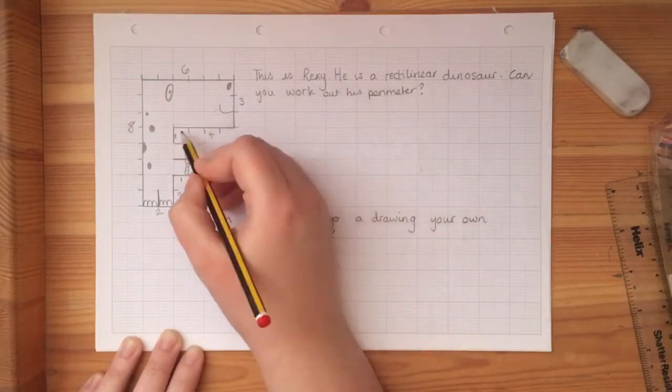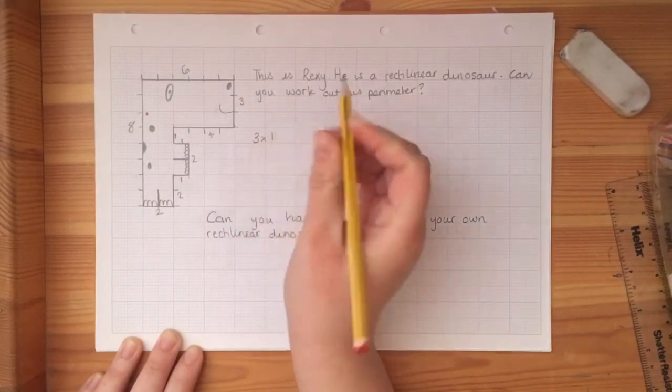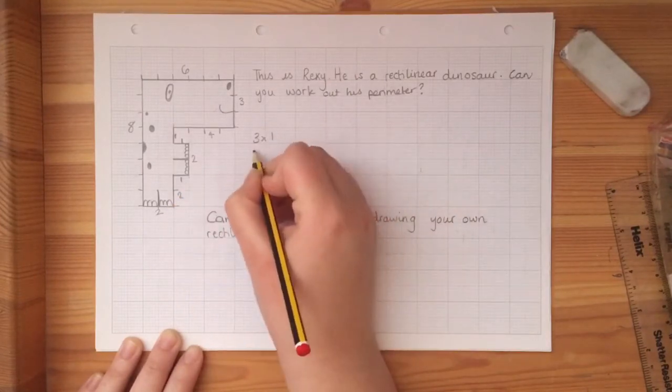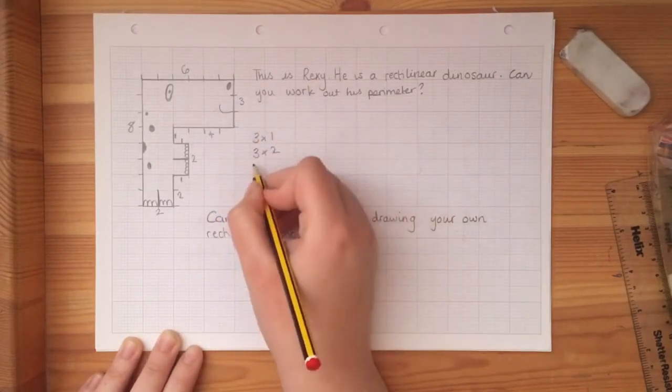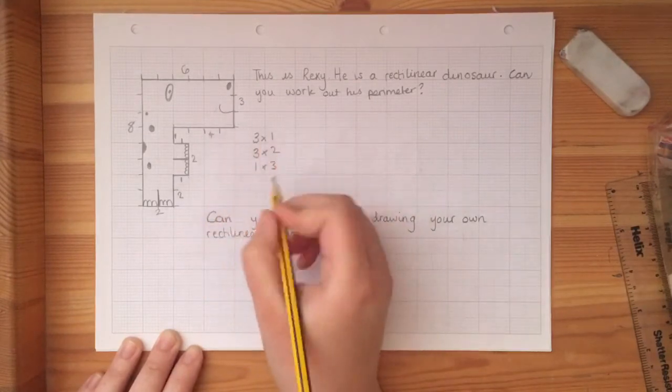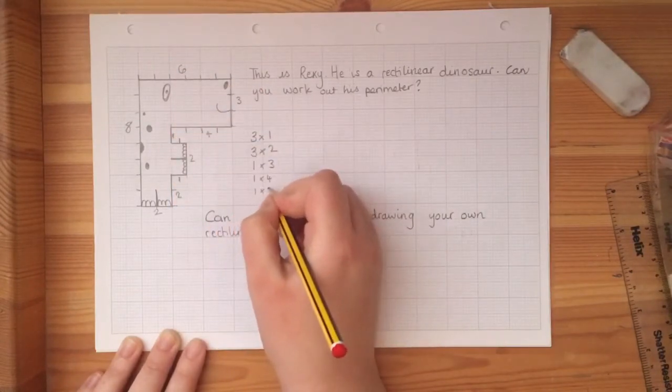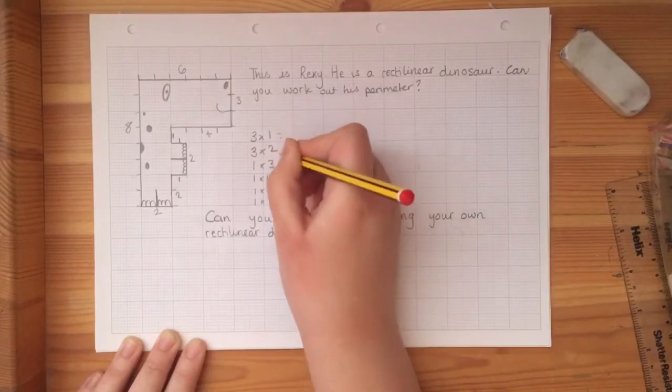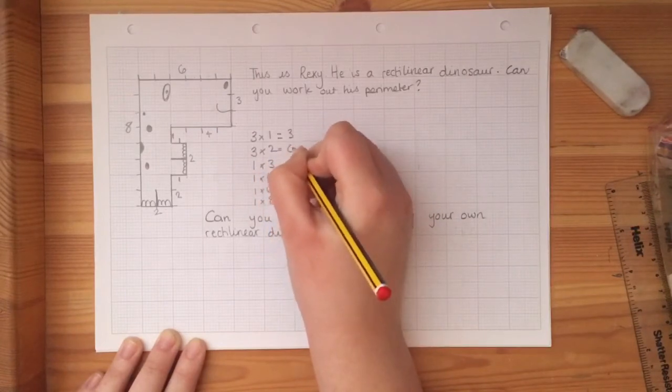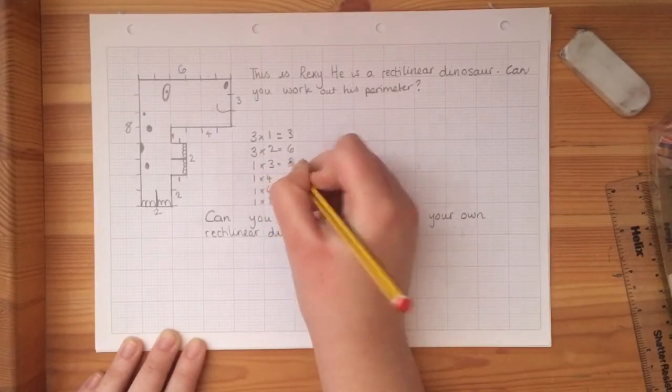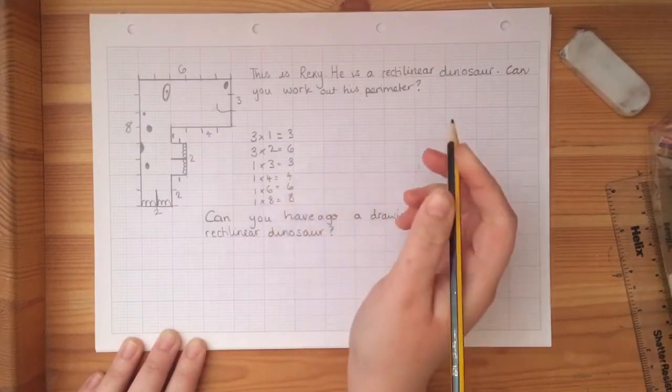So let's do the timesing. So I've got one, two, three times one. I've then got one, two, three times two. I've got one number three. So that's one times three. I've got one number four. So that's one times four. I've got one six. And then I've got one eight. So three times one is three. Three times two is six. One times three is three. And then all of these, it's just one times. So we've just got to do the number again.